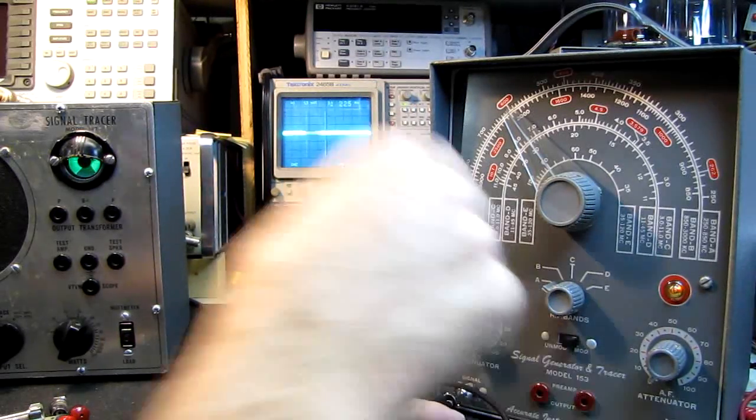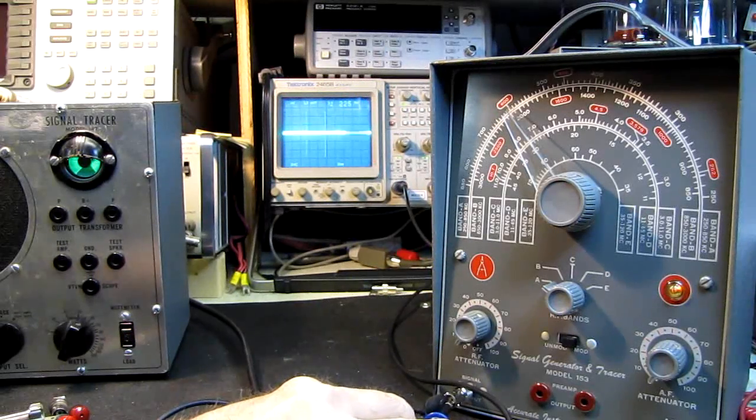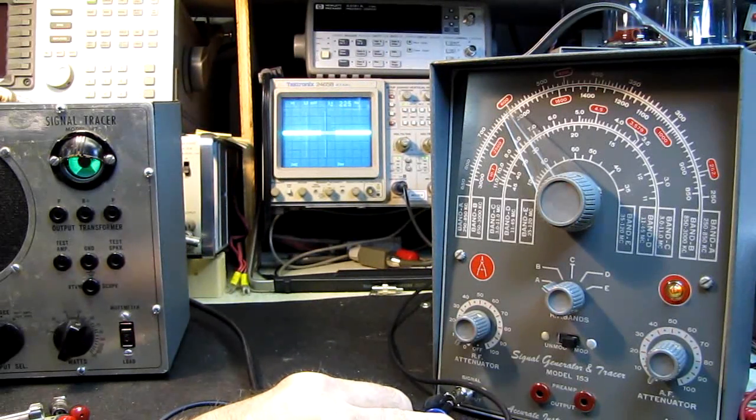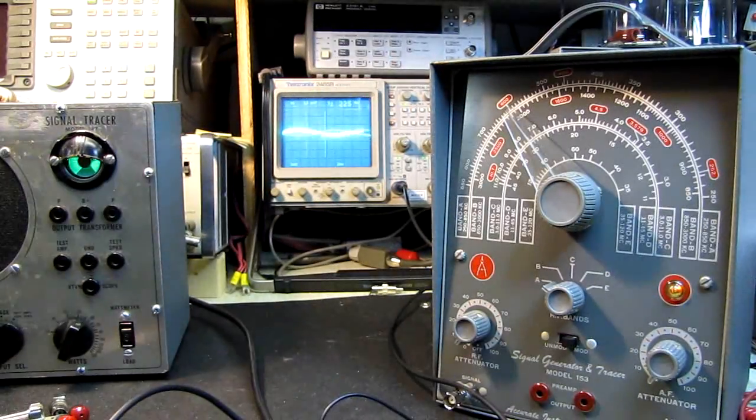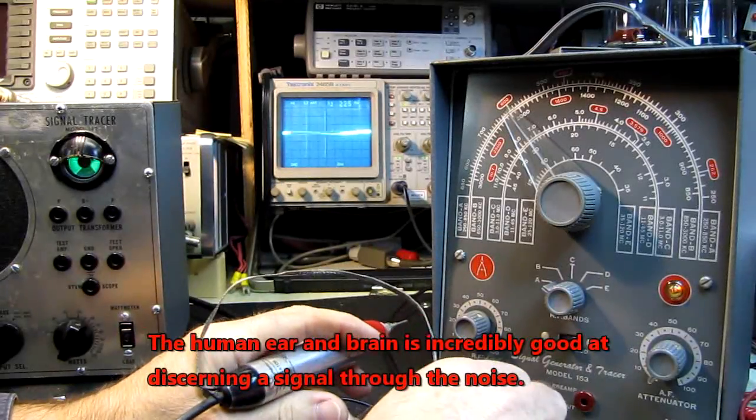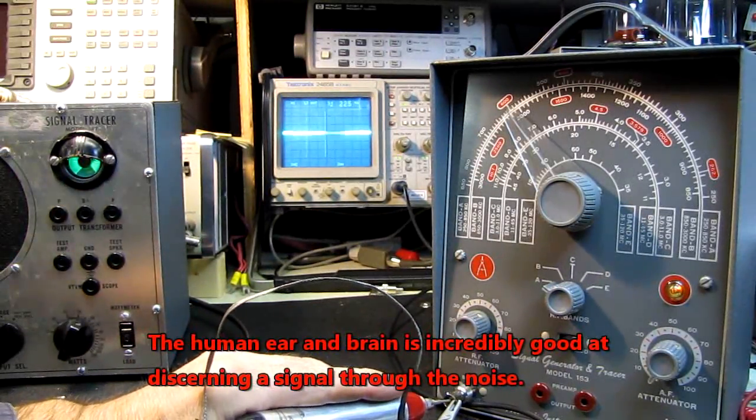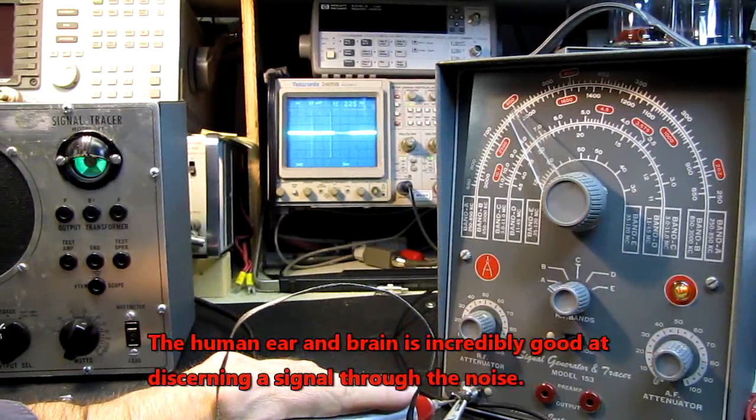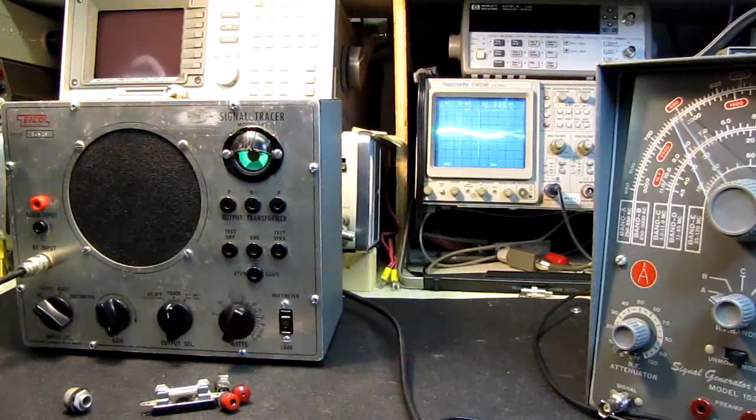And as I turn it down, barely discernible. That would not really be useful. You wouldn't know if you were looking at noise or an actual signal. This is where the signal tracer comes in. So handy. When you are going through a circuit, I can come over here and I can actually hear my RF being demodulated. That will prove to be very useful.